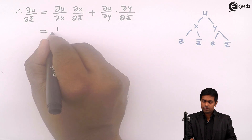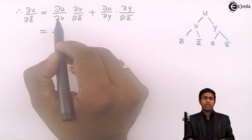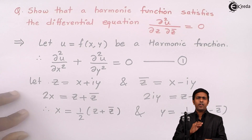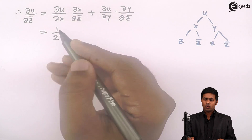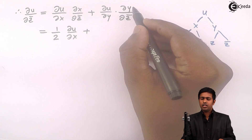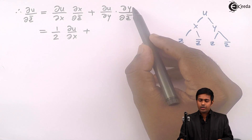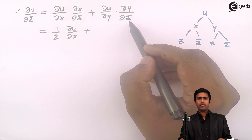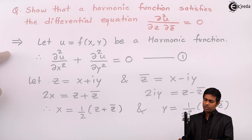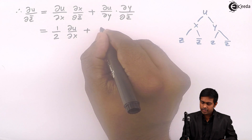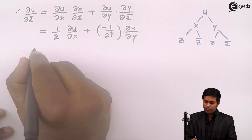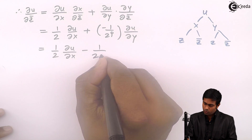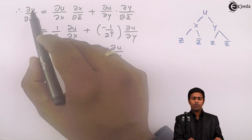Since u is not explicitly defined, we keep ∂u/∂x as it is. Next, to find ∂y/∂z̄, we differentiate y = (z - z̄)/2i with respect to z̄ partially. The derivative of z is 0, and the derivative of -z̄ is -1, giving ∂y/∂z̄ = -1/2i. Therefore, ∂u/∂z̄ = (1/2)(∂u/∂x) - (1/2i)(∂u/∂y). This is equation number 2.